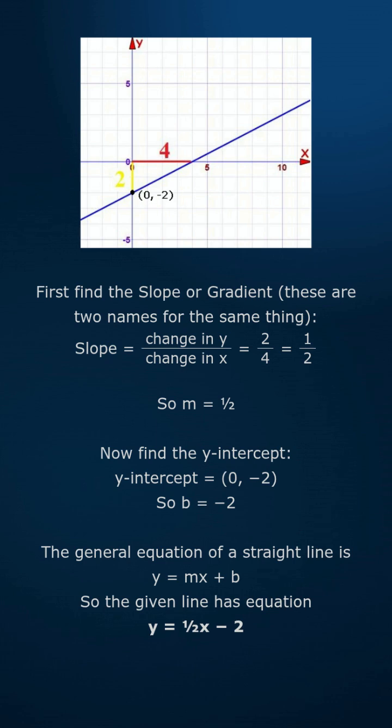The general equation of a straight line is y equals mx plus b. So the given line has equation y equals half x minus 2.